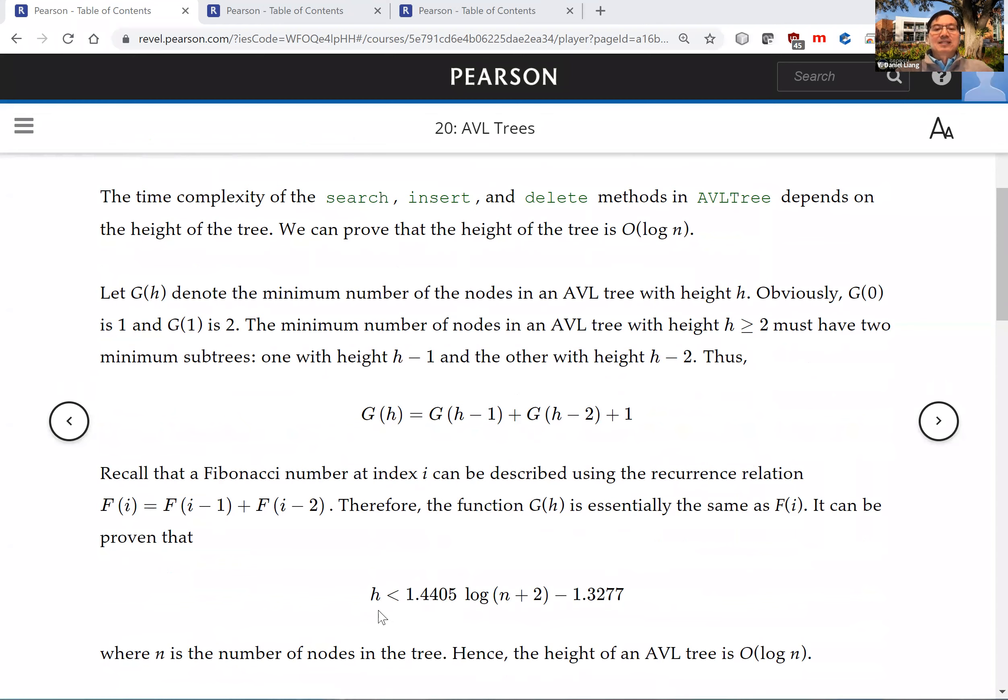We're going to find out that h is less than this number right here. So that means h is O(log n). So the height of an AVL tree is O(log n).